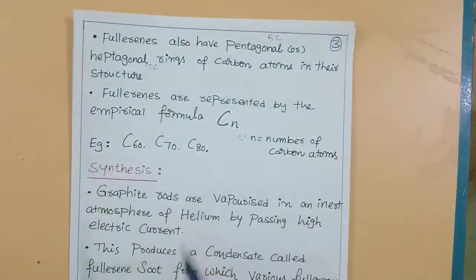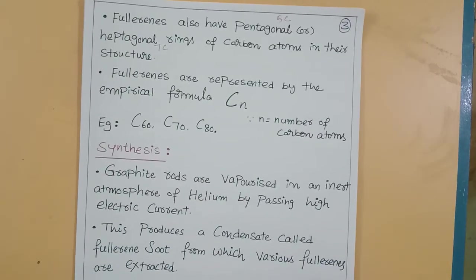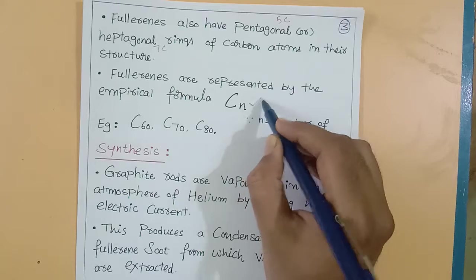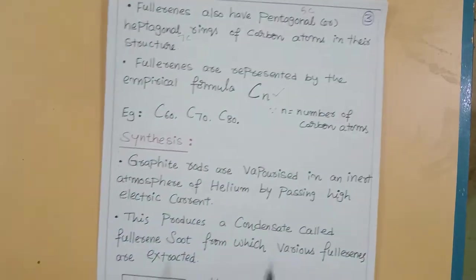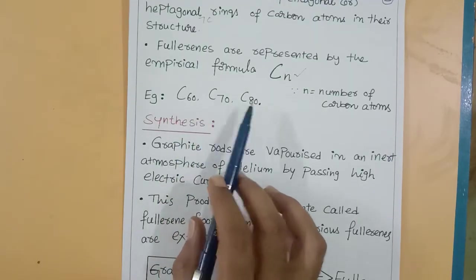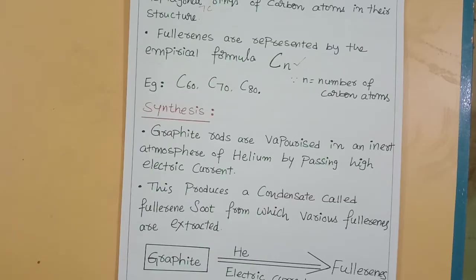Fullerenes are represented by the empirical formula Cn, where n is the number of carbon atoms. For example, C60, C70, C80. This is the simple structure of fullerenes.